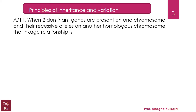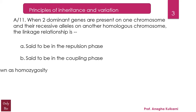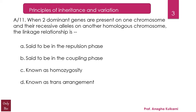Your options are: A, said to be in the repulsion phase; B, said to be in the coupling phase; C, known as homozygosity; and D, known as trans arrangement. The correct answer for this question is B — it is said to be in the coupling phase.